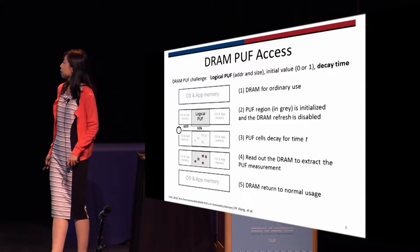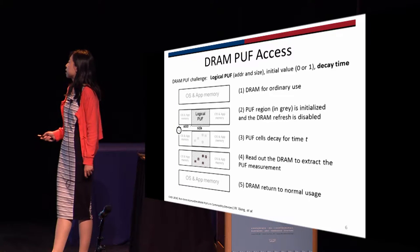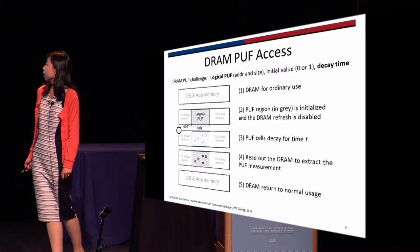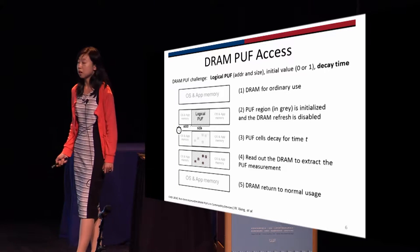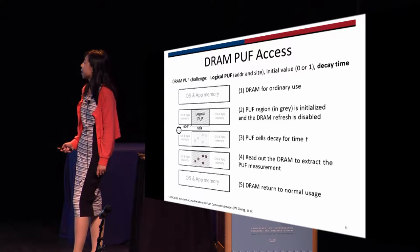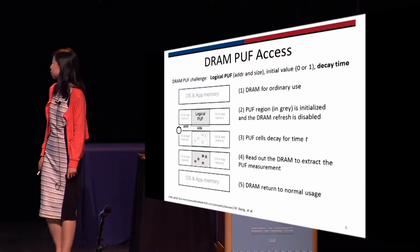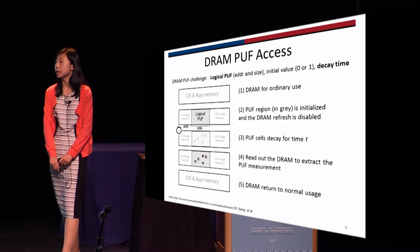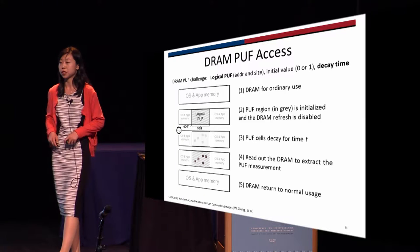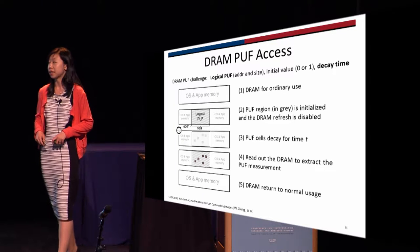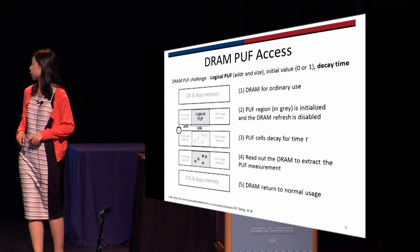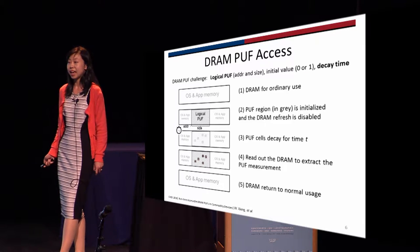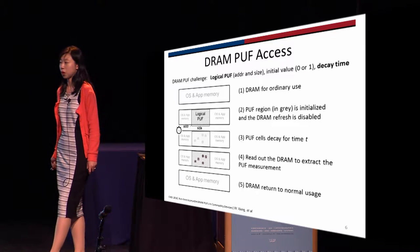Then DRAM refresh is disabled for this area, and the cells start to decay. After the decay time T, we read out the PUF region — that is the DRAM PUF measurement. After that, we can enable the refresh again and the DRAM is returned to normal usage.